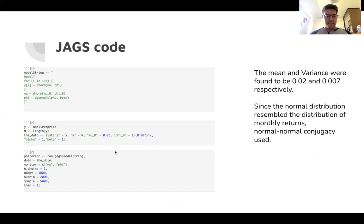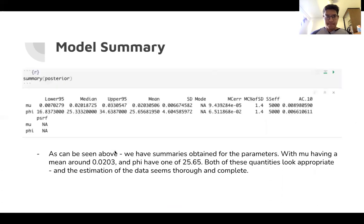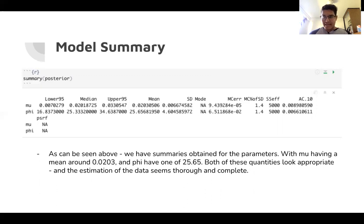We got a summary of the posterior: mu has a mean around 0.02, and phi has a value of 25.65. This is actually pretty close to what the frequentist approach also obtained. So the Bayesian method seems to be working pretty well for the data, and we used both methods on that data.